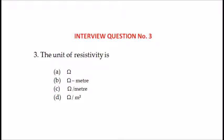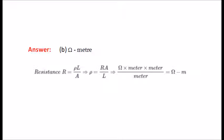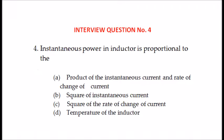Third question: the unit of resistivity is — ohm, ohm-meter, ohm per meter, or ohm per meter squared? The answer is ohm-meter. Because R equals rho·L divided by A, which can be rewritten as rho equals R·A divided by L. The unit of resistance is ohm, area is meter squared, and length is meter, so the unit of resistivity is ohm-meter.